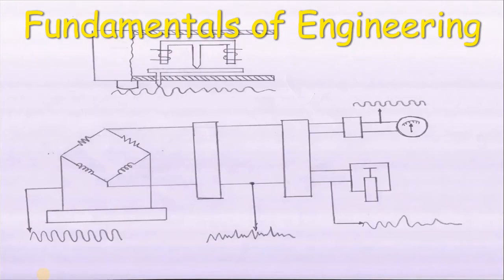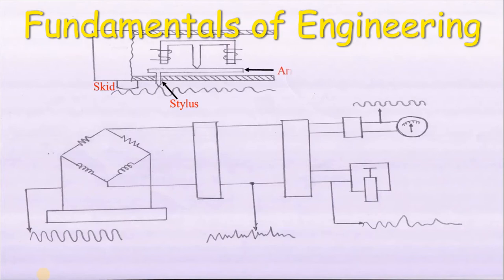Now we will see the setup of the Taylor Hobson Talysurf. The measuring head consists of a diamond stylus of about 0.002 mm tip radius and a skid or shoe, which is drawn across the surface by means of a motorized driving unit — a gearbox providing three motorized speeds giving 20x and 100x horizontal magnification respectively, and a speed suitable for average reading. A neutral position in which the pickup can be transferred manually is also provided. The arm carrying the stylus forms an armature which pivots about the center piece of an E-shaped stamping.